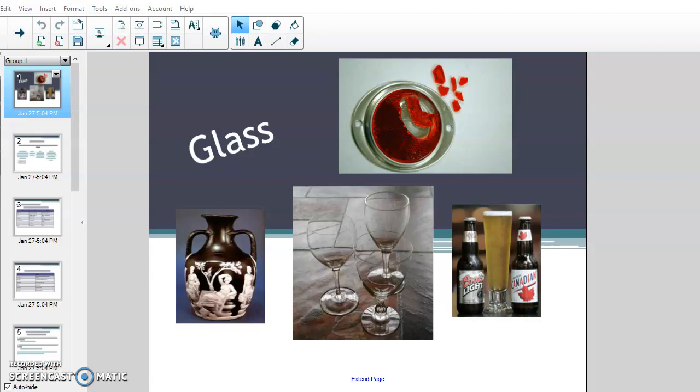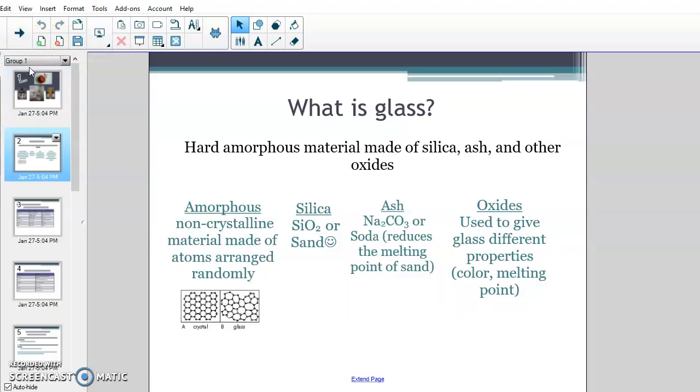Hi, today we're going to talk about glass. Specifically, the properties of glass that are useful to us for forensic science. You should have your notes in front of you, and we'll get started filling them out. So what is glass? Let's define it first.